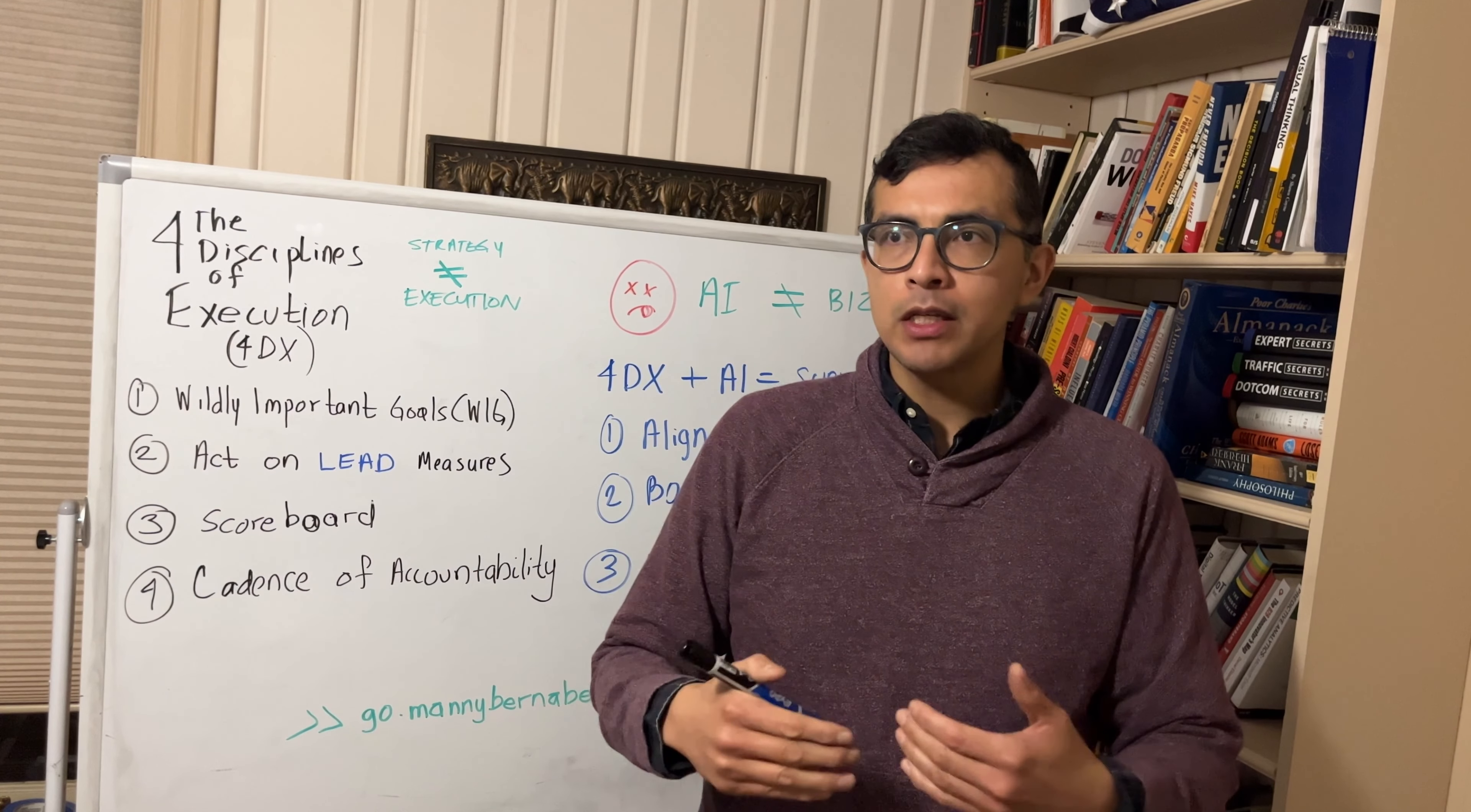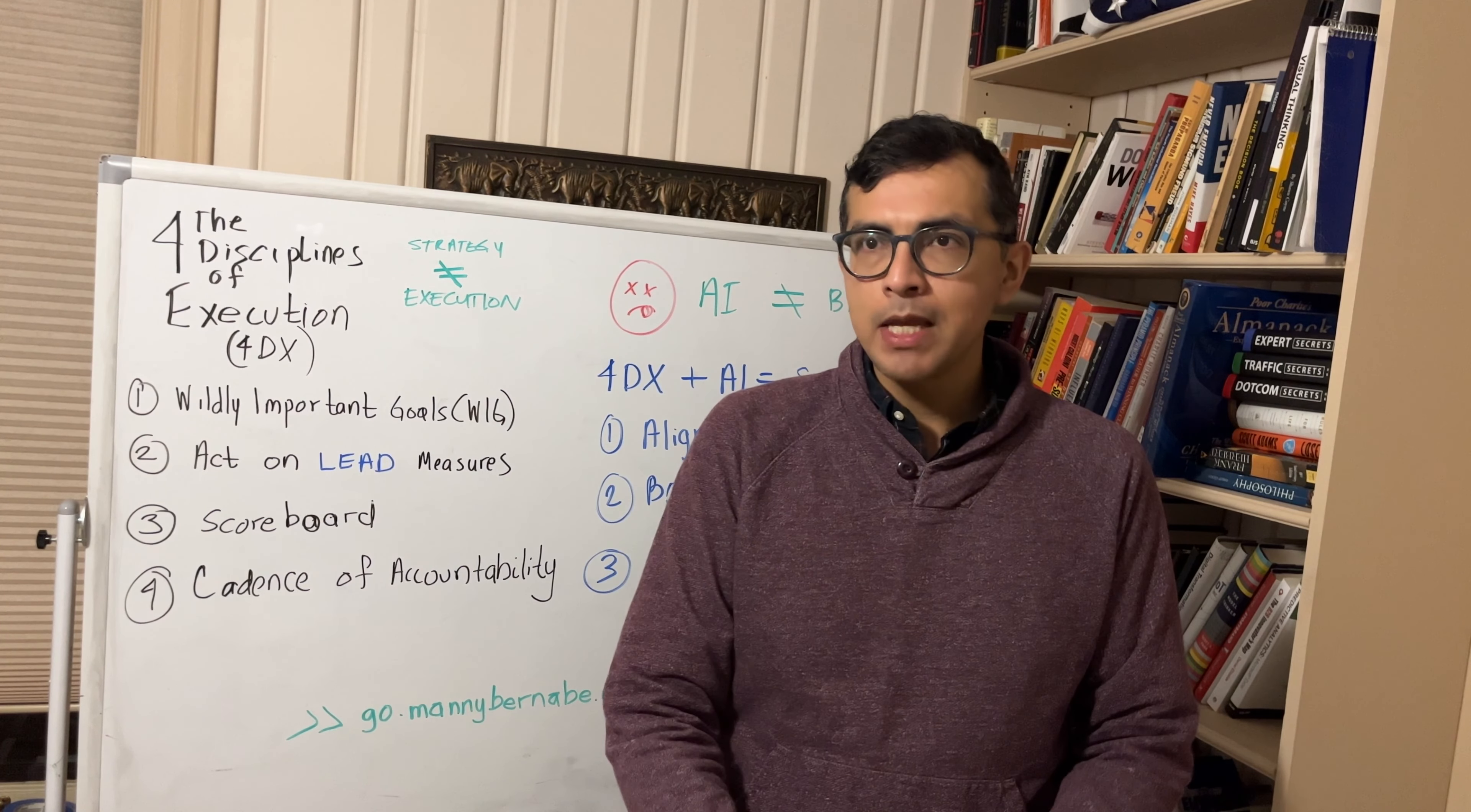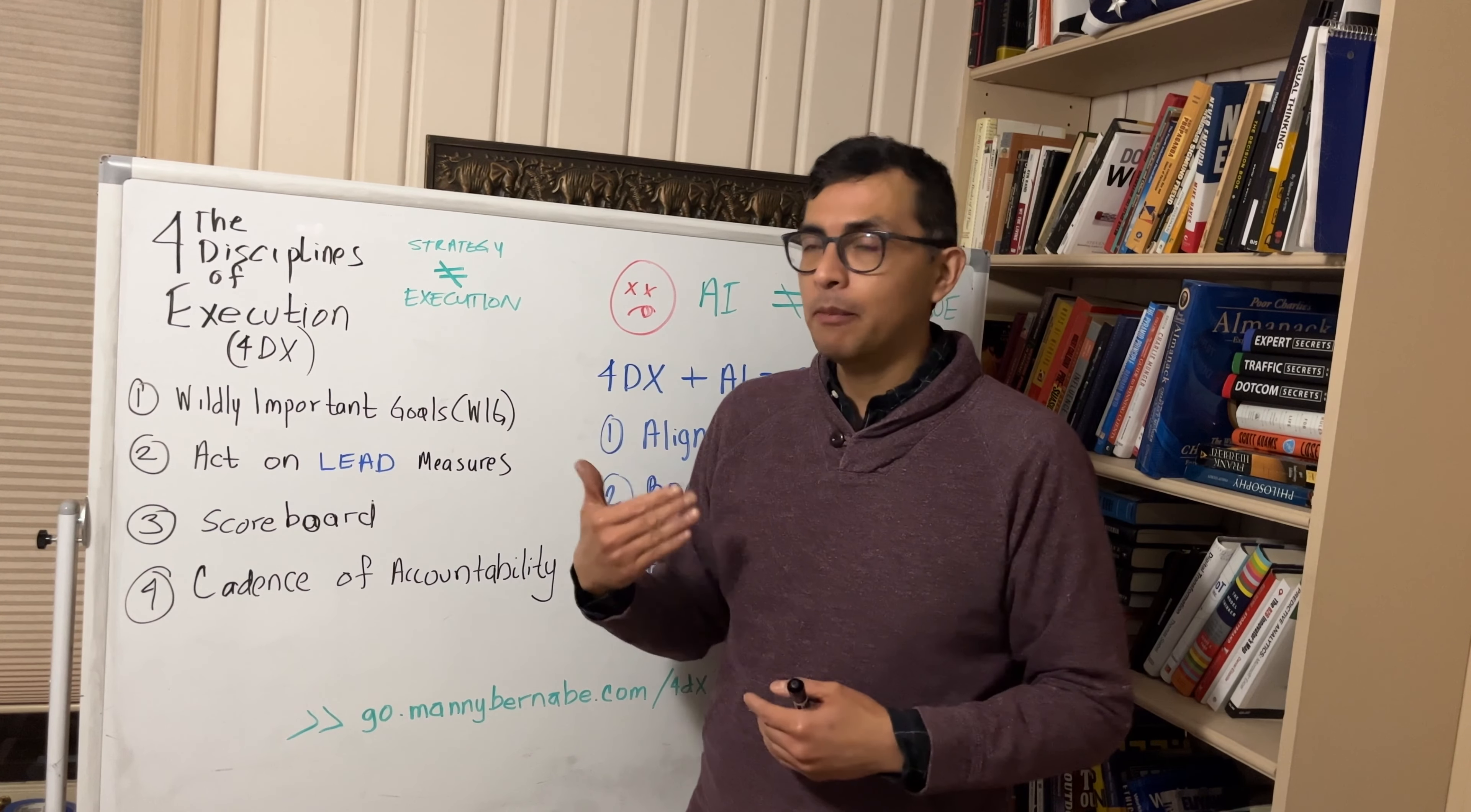Lead metrics are the metrics that you can do week to week that are going to help you generate that lag metric that you want to have over a period. So if your lag metric is to generate $25 million in sales in a quarter, then your lead metric might be the number of leads that you're generating in a particular week, the number of calls that you're making, the number of lead magnets, the number of videos that you're doing in a particular quarter, such as this one. So those are the lead metrics that you can control, and that's really what you want to focus on and keep top of mind.